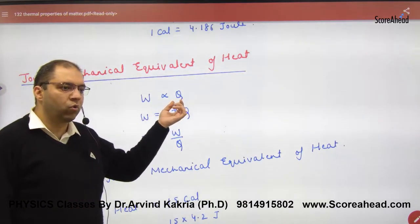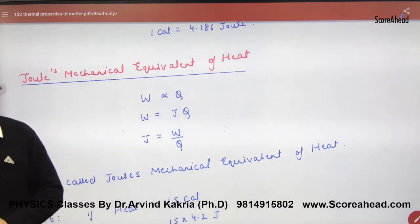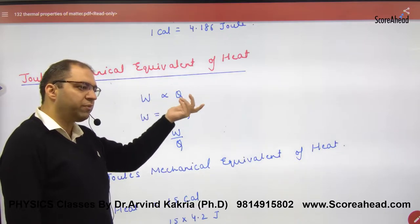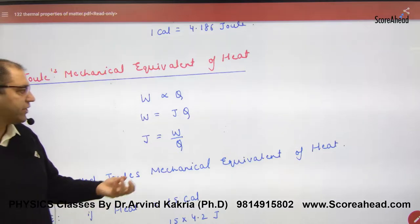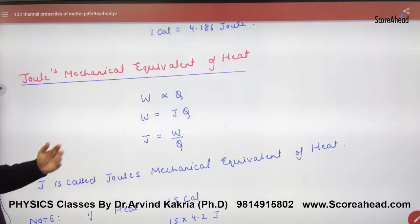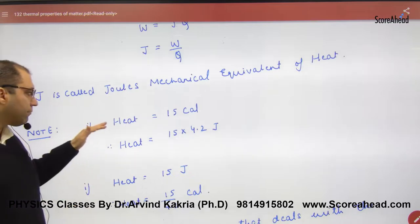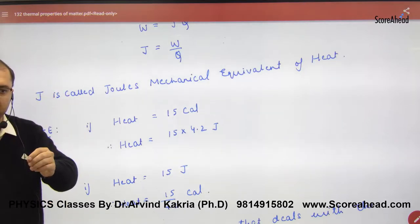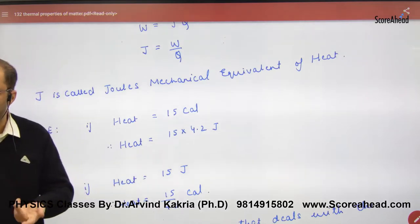Joules is the mechanical equivalent of heat. If you want to convert heat into work done, you use a constant J. Practically: if you have 15 calories and need to convert to Joules, multiply by 4.2 and the answer comes in Joules. If the heat is 15 Joules and you want to convert to calories, divide by 4.2.